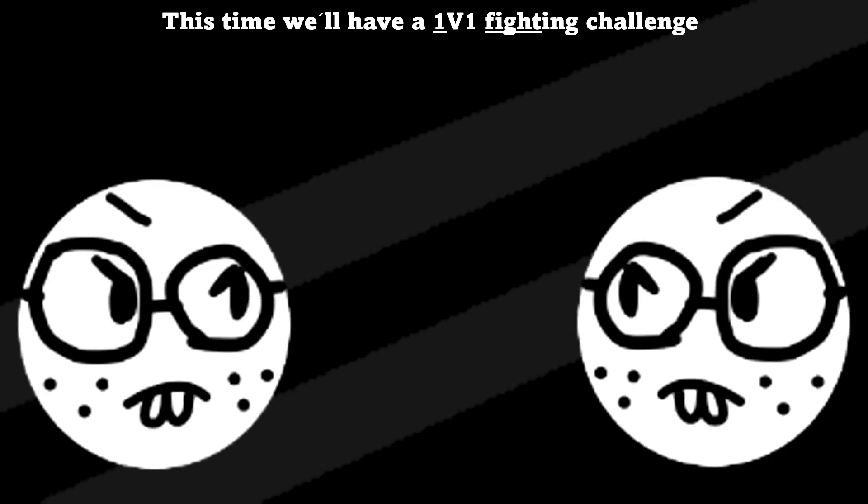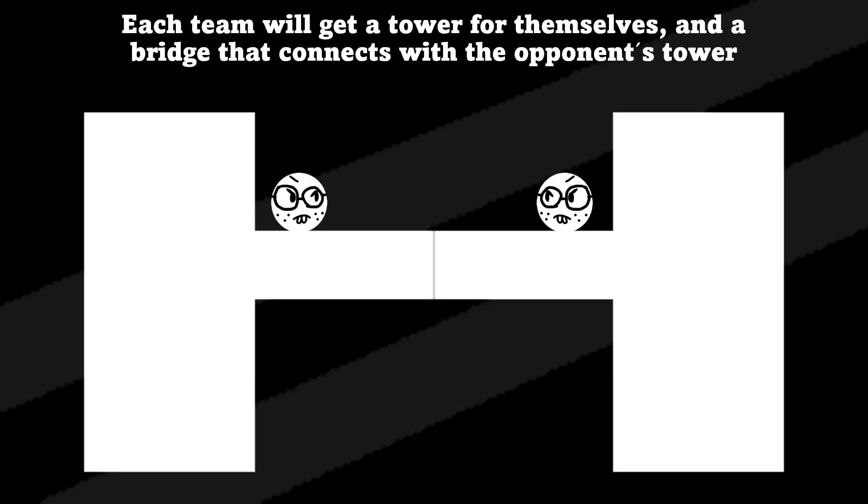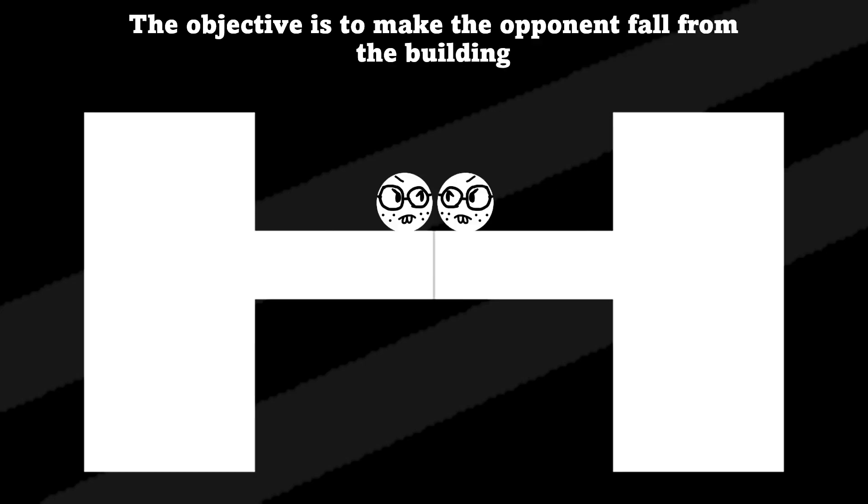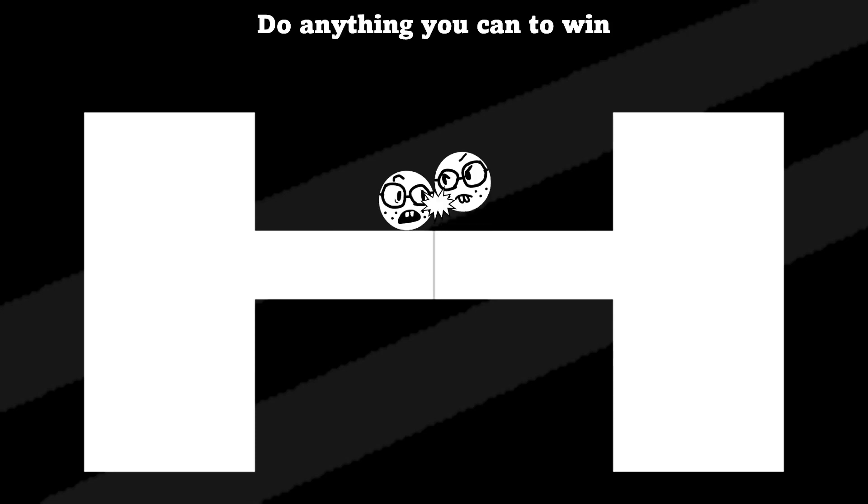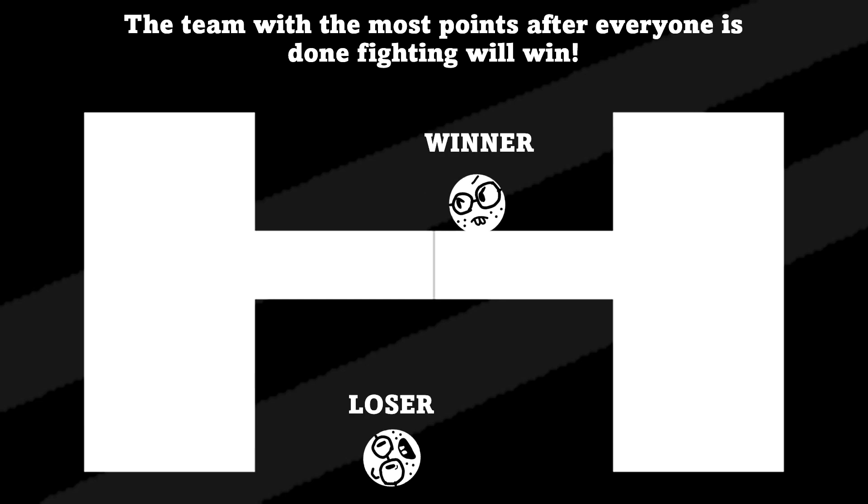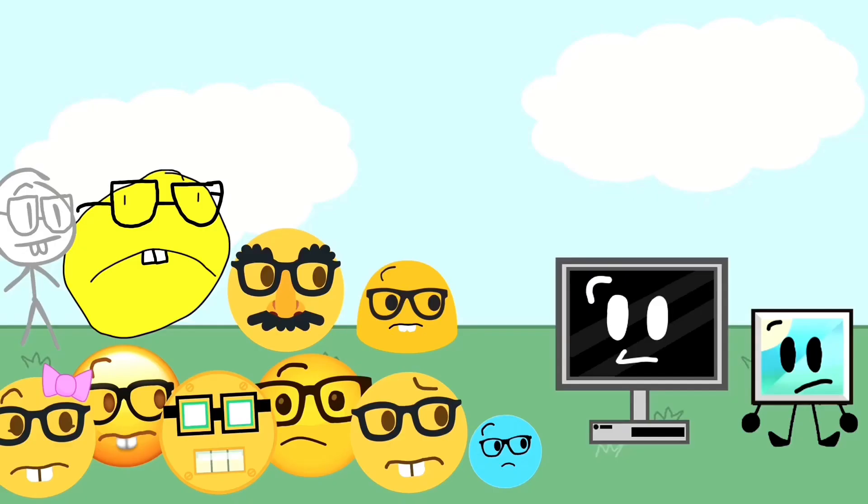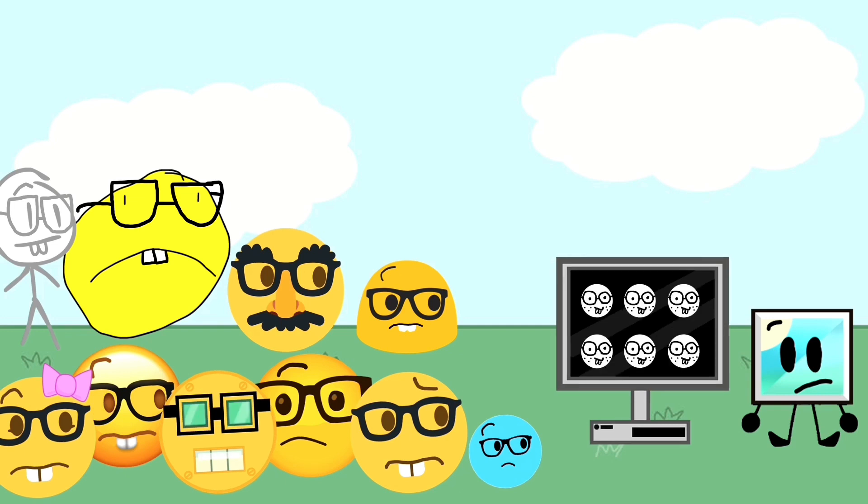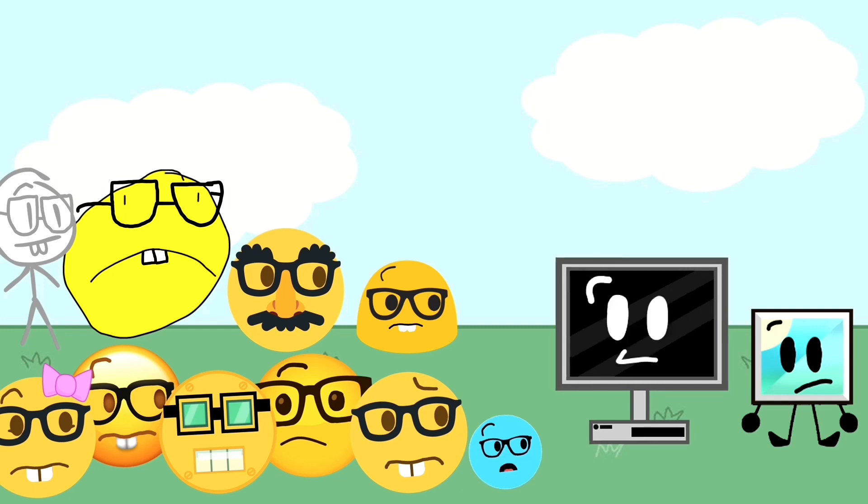This time we'll have a 1v1 fighting challenge! Each team will get a tower for themselves, and a bridge that connects with the other opponent's tower! The objective is to make the opponent fall from the building! Do anything you can to win! Because the winner will get a point for their team! By the end of the challenge, the team with the most points will win! There's a problem with that! Nameless has less contestants! Two of us math nerds won't even get to do the challenge! I have a solution to that! Let's pick two math nerds to fight each other! With the winner getting the reward! How are we choosing the competitors, though? Because I'd like to compete for a reward!